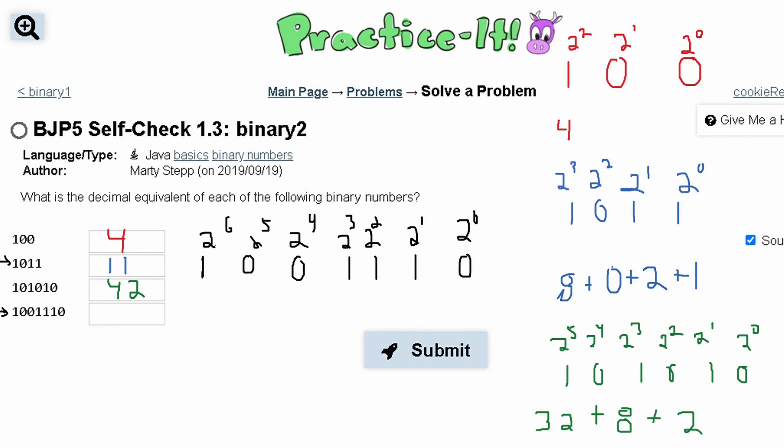Once we have all these written out we multiply what's on top by what's on bottom and then add everything together. So we have 2 to the 6th which is 64. We have two 0's here so we skip over them. Then we have 2 cubed which is 8 plus 2 to the 4th or 2 squared which gives us 4 plus 2 to the 1st which gives us 2.